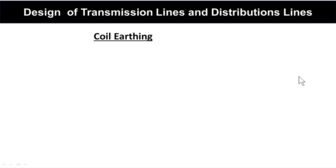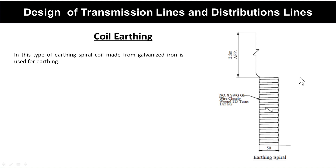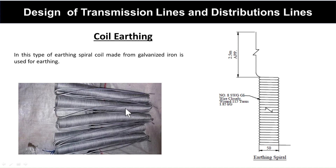Coil earthing: In this type of earthing, a spiral coil made from galvanized iron is used. The coil is 8 SWG GI wire, has 115 internals, and weighs approximately 1.85 kg. The diameter of this coil is 50 mm.